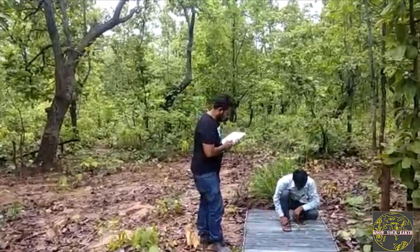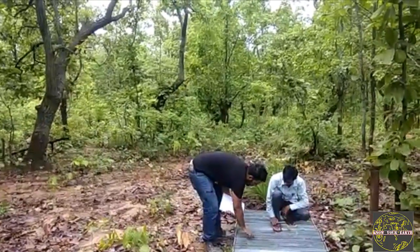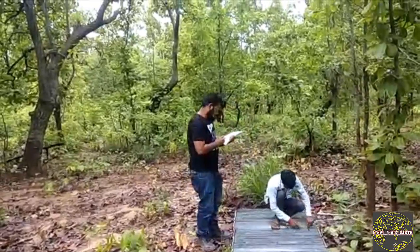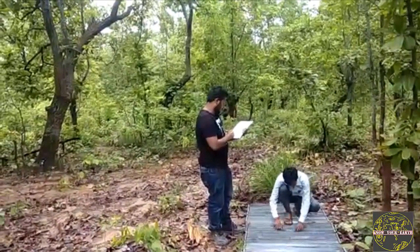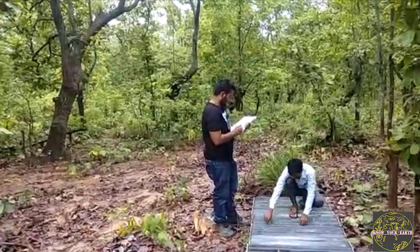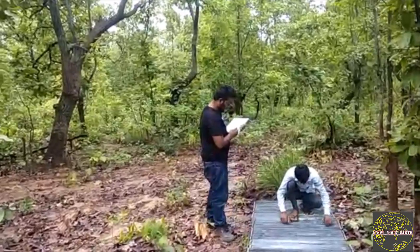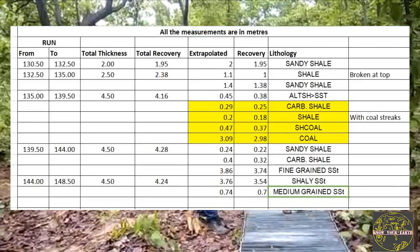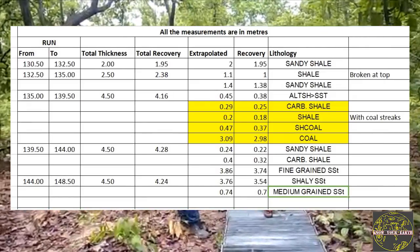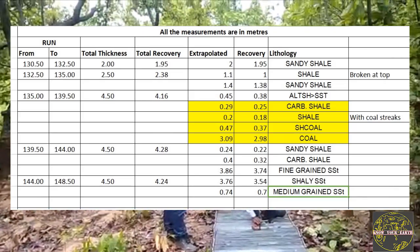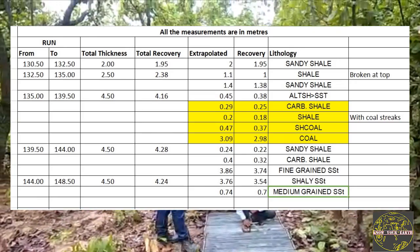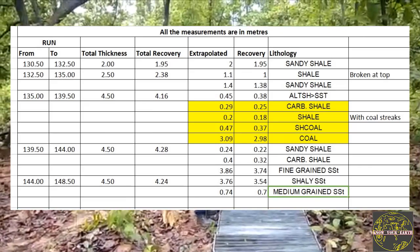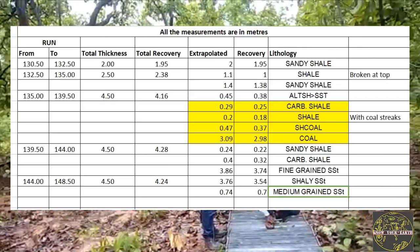As discussed about the process of logging, we can observe the geologist, after careful examination of the cores, writing down the borehole data. This will help us decipher the arrangement of rock strata and the coal beds below the surface of the earth. The logging data consists of different columns: the first column covers the run — from and to which depth the data is being logged — which gives us the thickness. There will always be some core loss, so the core recovery is noted, including total recovery, individual extrapolated thickness, individual recovery, and individual lithology along with structures.